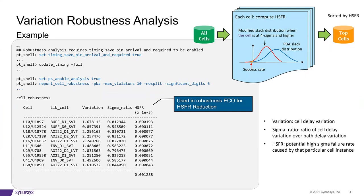In the variation robustness approach, we analyze the whole design. That is, the analysis considers all the cells in the design and checks how much variation each cell can have. As shown in the graph on the upper right, we determine all the paths going through a specific cell and calculate the worst slack distribution for that cell. Then, we compute the modified slack distribution under the condition that this cell is at a high sigma, for example, 4 sigma. And this curve is shown in red.